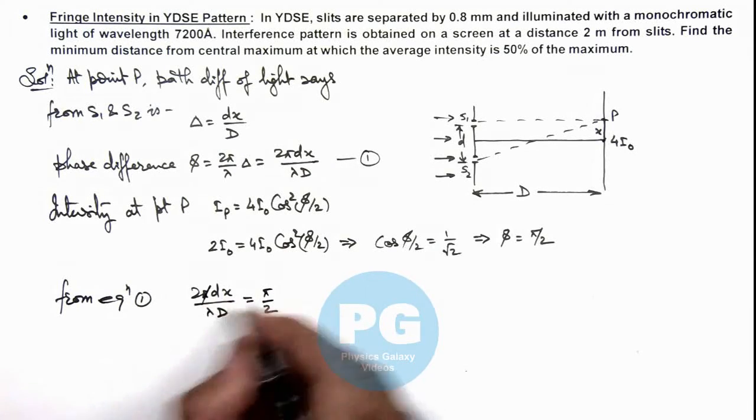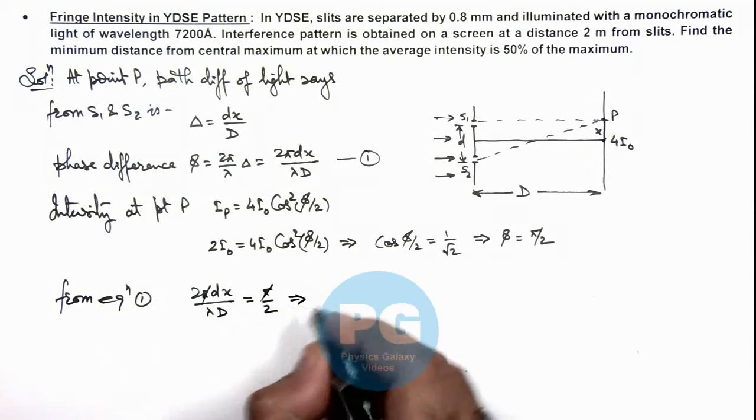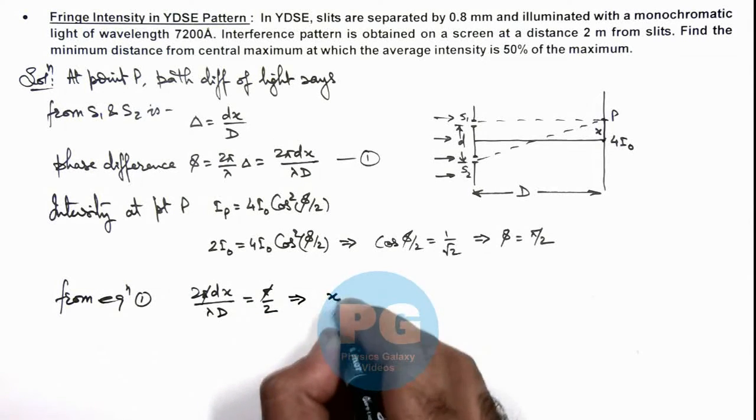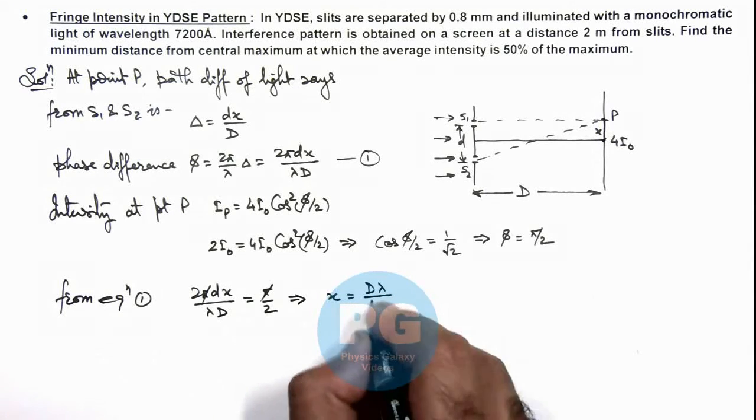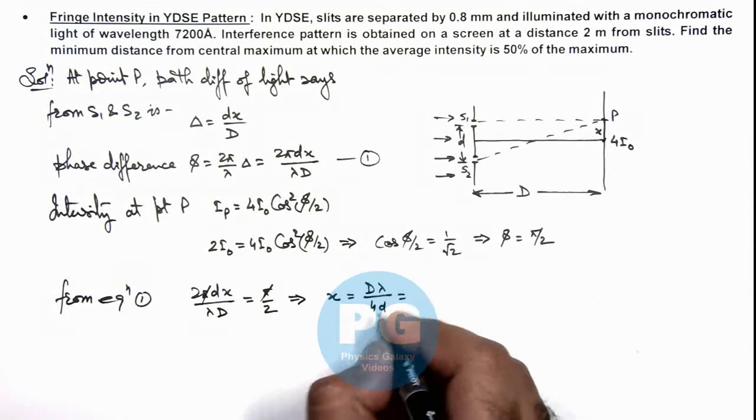On further analyzing this will give us the value of small x. x is equal to Dλ by 4d.